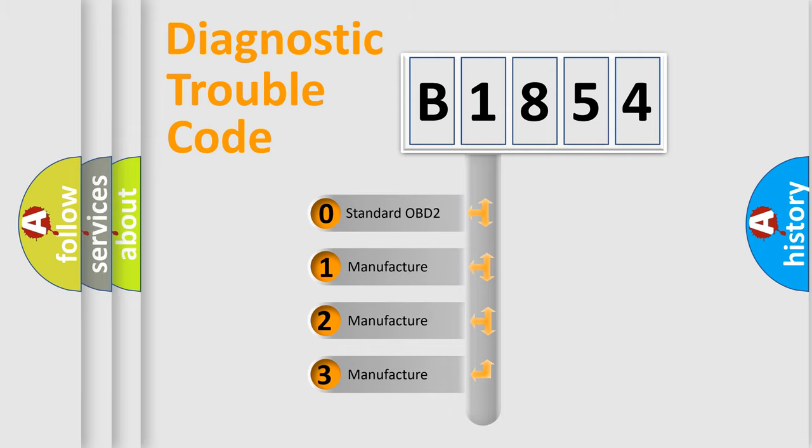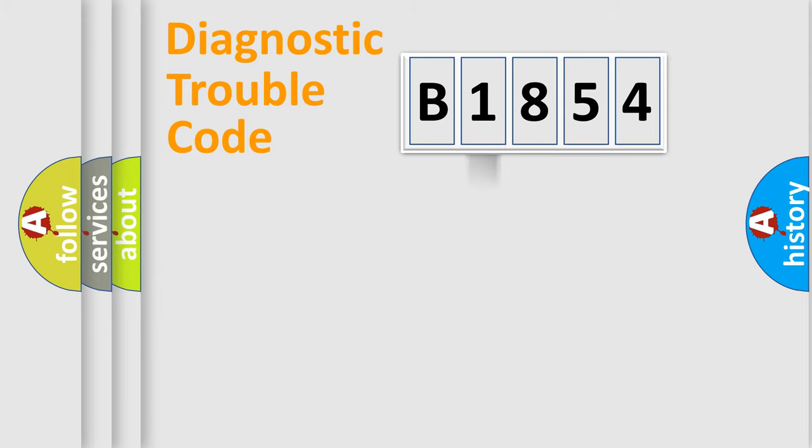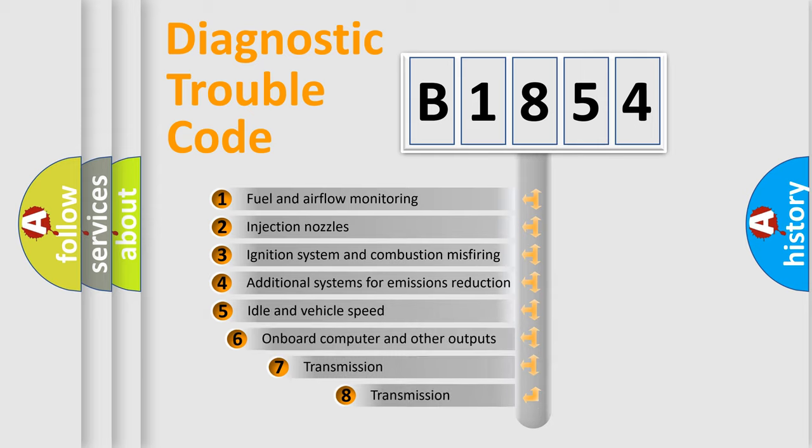If the second character is expressed as zero, it is a standardized error. In the case of numbers 1, 2, 3, it is a manufacturer-specific expression of the car-specific error.